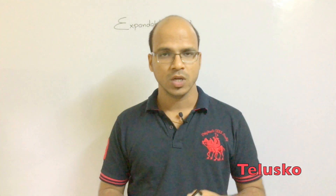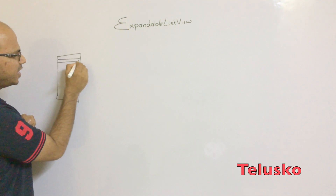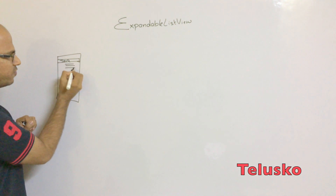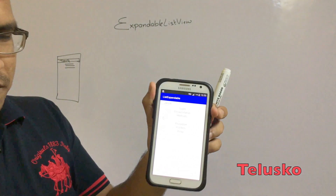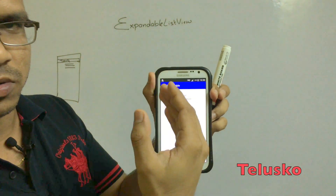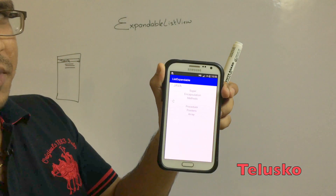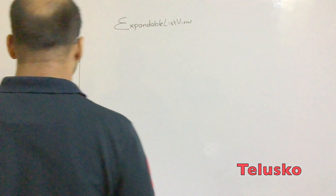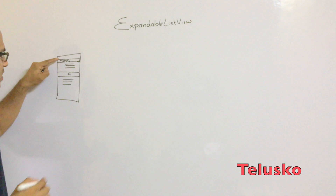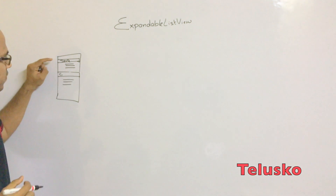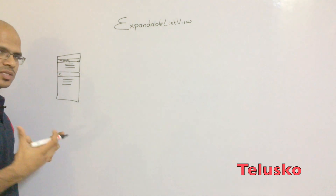Now, how do we build this? We want to create a list where we have a parent element which is the group name — let's say Java — and inside it we have child elements. I've made the child elements center-aligned just to visually distinguish them, while Java and C use left alignment. So the group names are on the left side and the child elements are in the center.